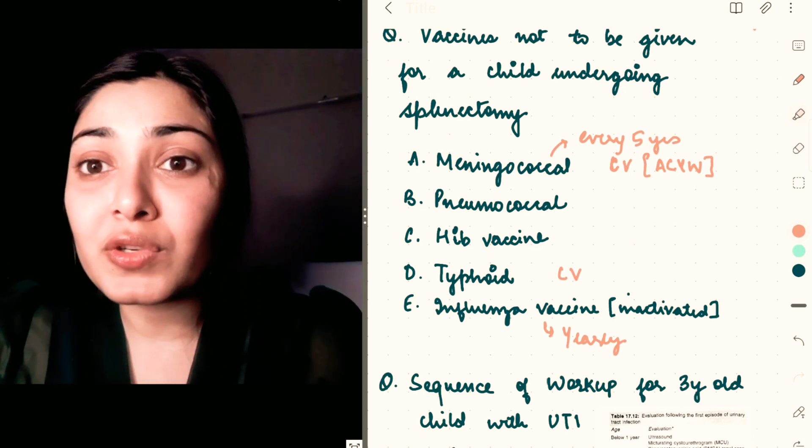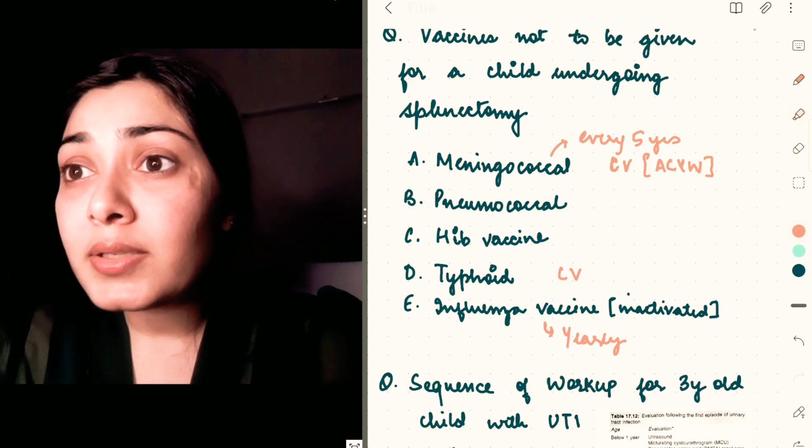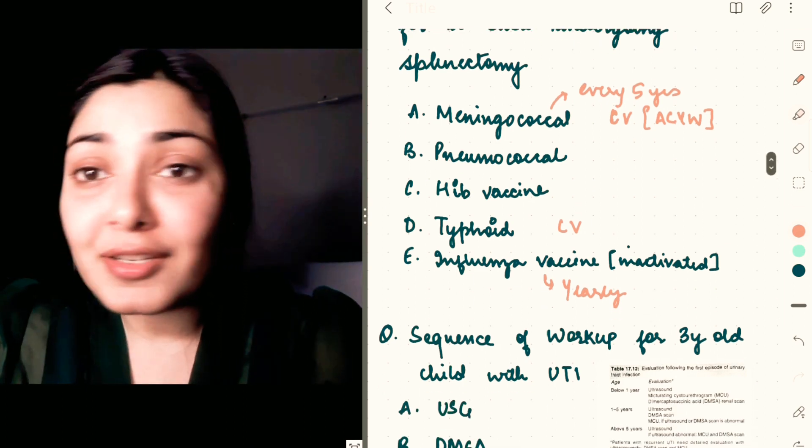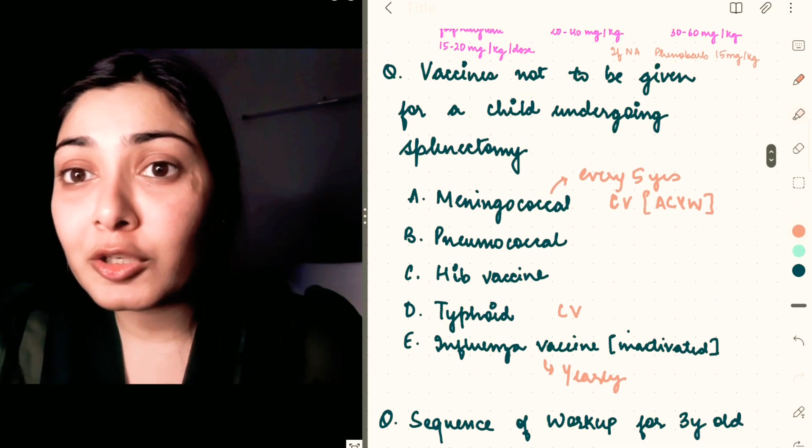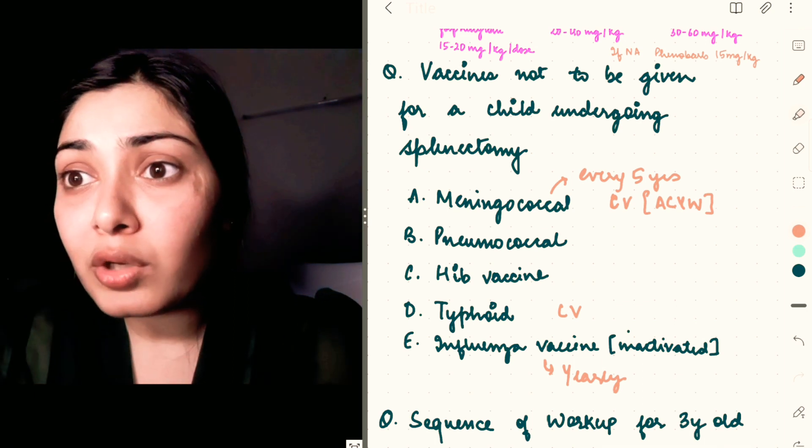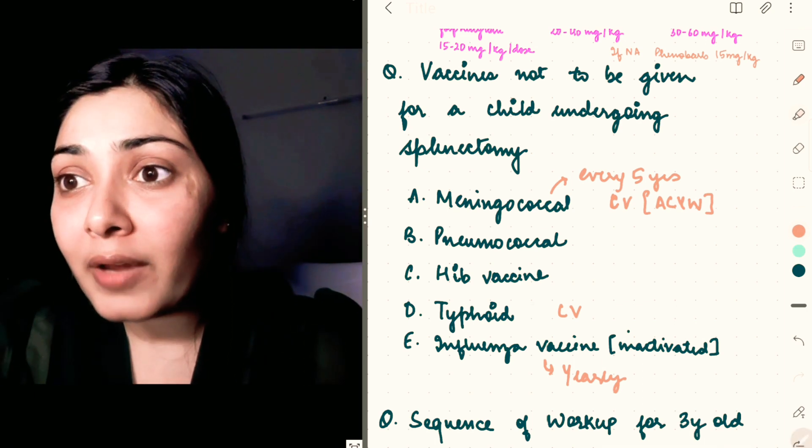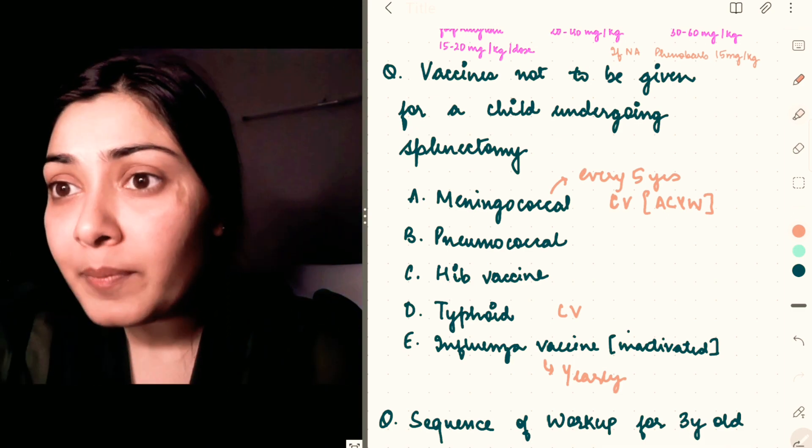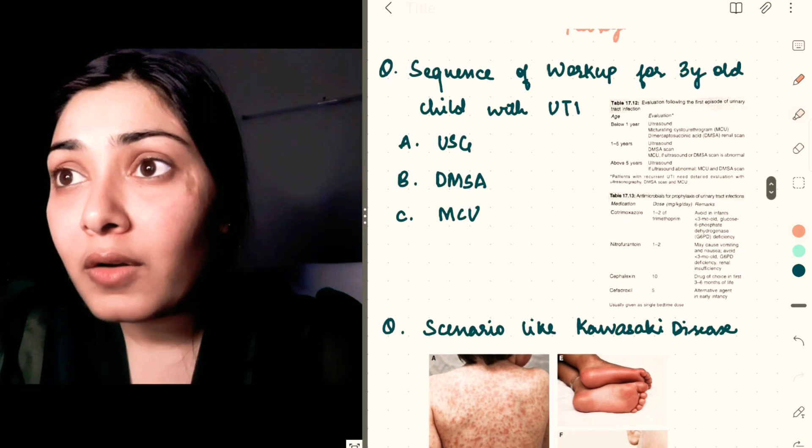You must have read about OPSI—that is opportunistic post-splenectomy infections. Still, no vaccine is contraindicated when it comes to an individual that has undergone splenectomy. So I think all these options were correct. If you have to choose the best one, I think typhoid would be the one, rest all are given.